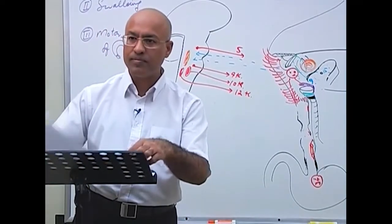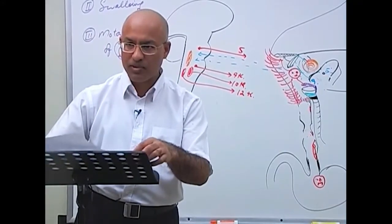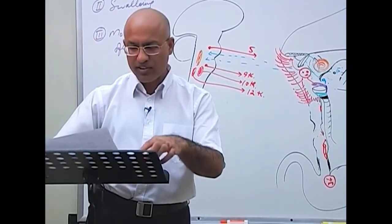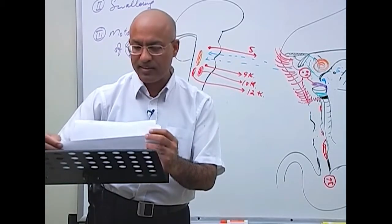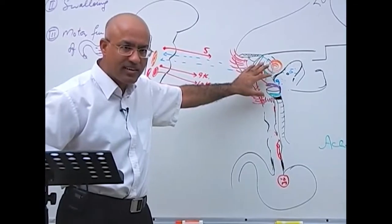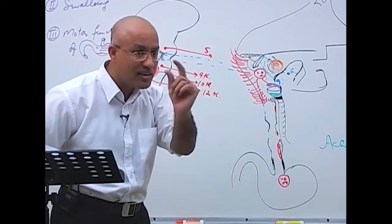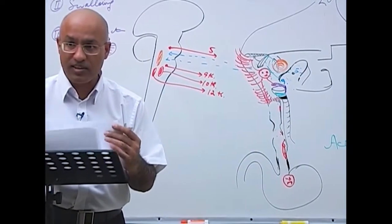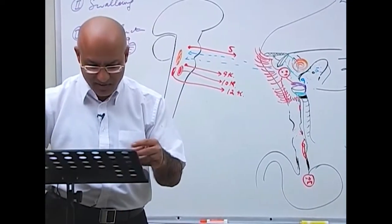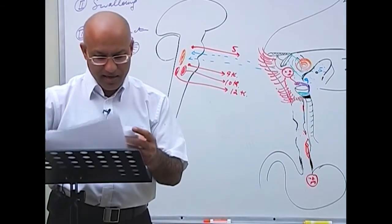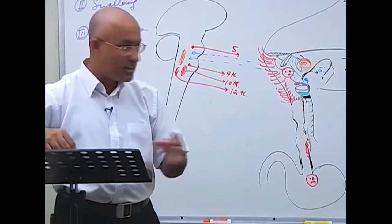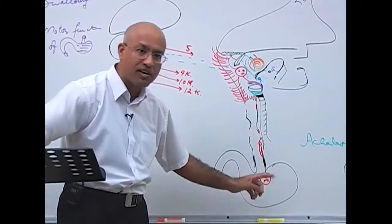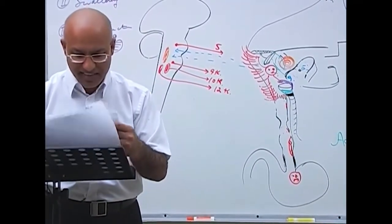In summary: the voluntary oral stage initiates swallowing — about one second; the pharyngeal stage takes about three to five seconds but briefly interrupts respiration; the esophageal stage takes about eight to ten seconds with gravity assisting. Also, when esophageal peristalsis comes down, receptive relaxation occurs not only in the lower esophageal sphincter but also in the upper part of the stomach, which gets ready to receive the food.